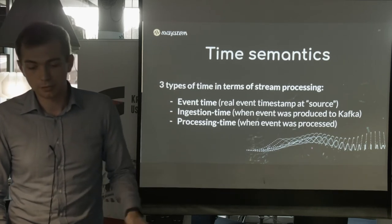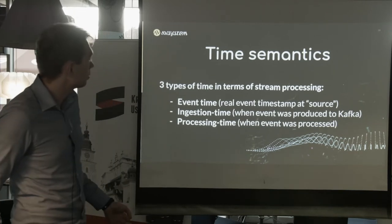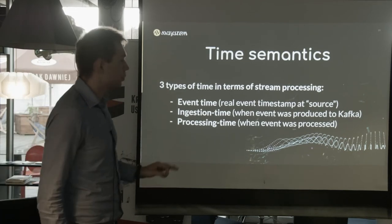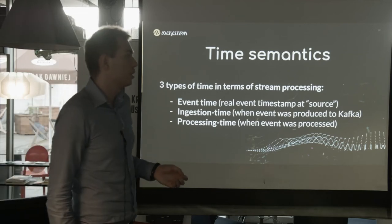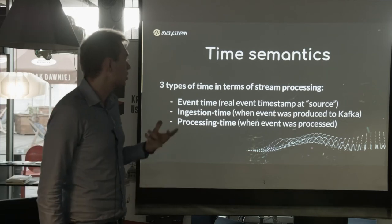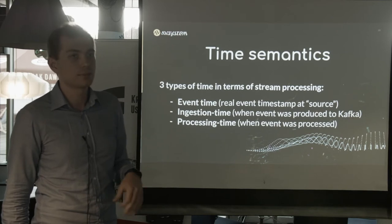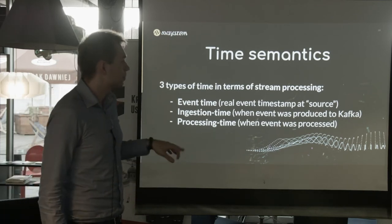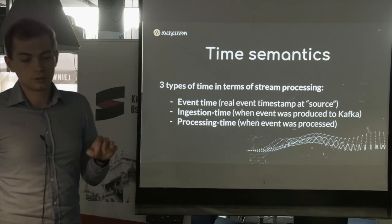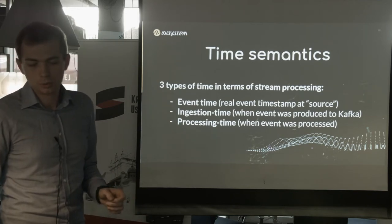If we talk about time, there are three types in terms of stream processing: event time, ingestion time, and processing time. I'd like to point out that pretty much always event time is what you're looking for, and it is not the default in Kafka Streams. You usually have to define a custom timestamp extractor that extracts the timestamp from the value, because usually the timestamp is hidden inside the value. The timestamp in a Kafka record is usually ingestion time or even processing time.